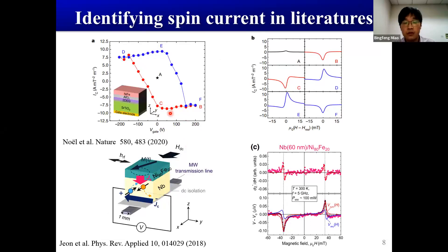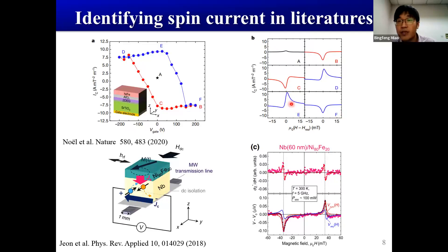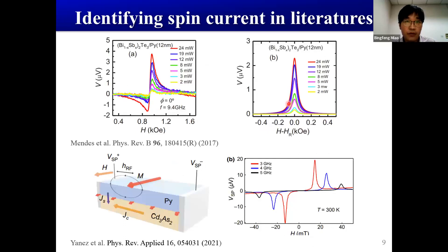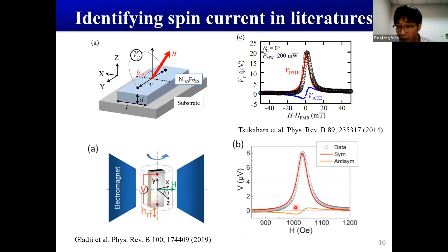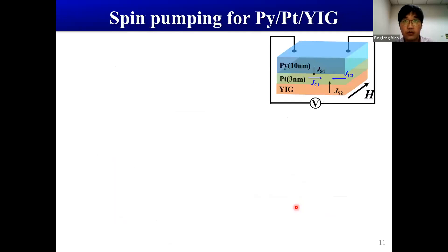For instance, there are papers discussing spin pumping for two-dimensional electron gas and superconductors where the signal changes sign with the magnetic field and is dominated by the Lorentz symmetric component. The same method has been applied to study spin-to-charge conversion in topological insulators, Dirac semimetals, and even ferromagnetic films themselves. But if you look carefully at all these references, even when the magnetic field is applied transverse to the stripe, there are still some anti-symmetric components, reflecting that there is some rectification signal present.